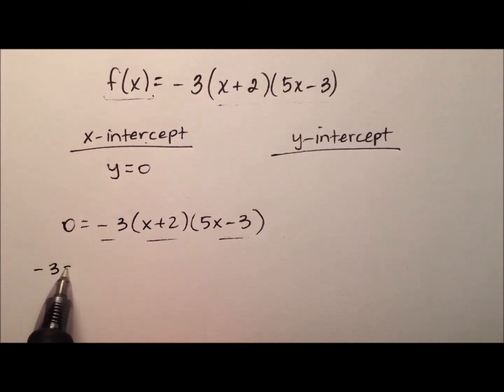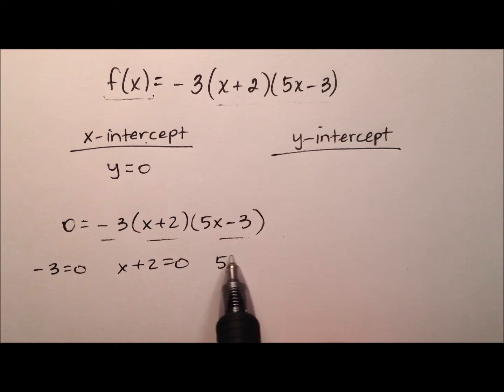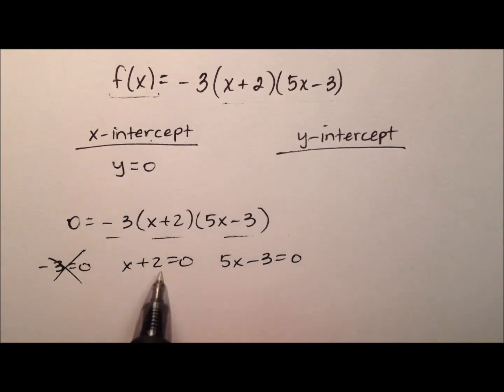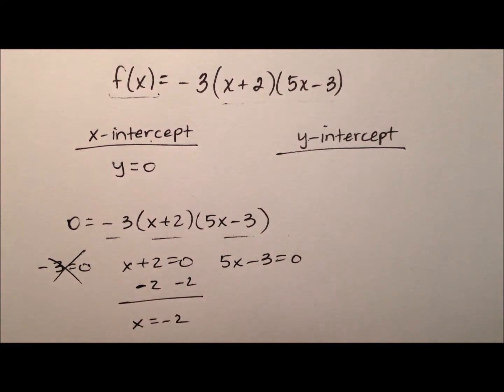So I'll have negative 3 equals 0, x plus 2 equals 0, and 5x minus 3 equals 0. Of course, the negative 3 equals 0 gives nothing, makes no sense. The second one, when we subtract 2 from both sides, we'll see that x equals negative 2.